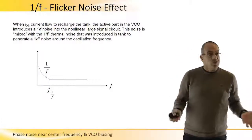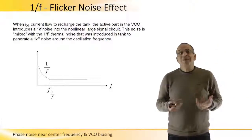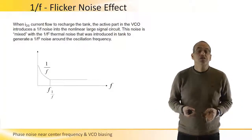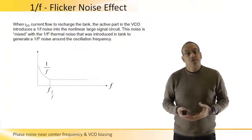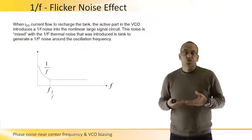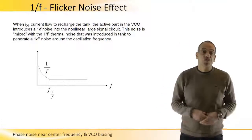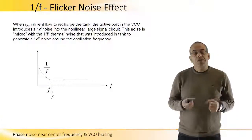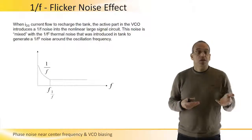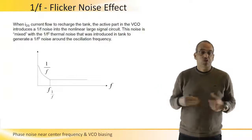This is a very large signal circuit where oscillations can sometimes go almost rail to rail, and there is some mixing of noises happening in the VCO. The 1/f flicker noise of the transistors actually mixes with the 1/f² thermal noise introduced by the tank and some portion of the thermal noise of the transistors themselves. This mixing produces a product described by 1/f³, as described in the Leeson model introduced previously.